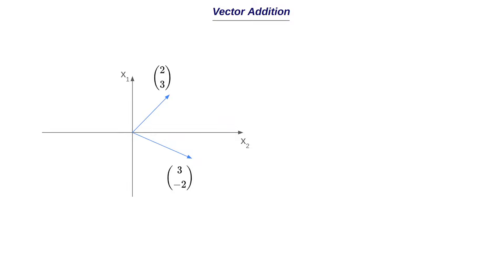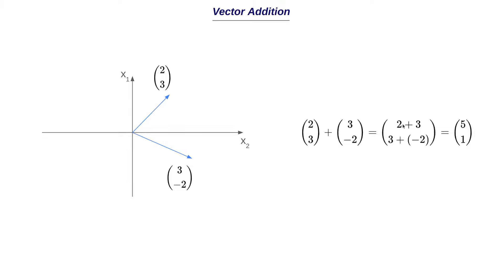There are two approaches to do this. One is the algebraic way: we have (2, 3) as the first vector and (3, -2) as the second. Vector addition is simply element-wise addition, so 2+3 and 3+(-2), giving a final result of (5, 1). An important aspect of vector addition is that the two vectors must have the same dimensions — you cannot add a vector with two dimensions to one with three dimensions. Also, when you add two vectors, the resultant is always a vector as well.